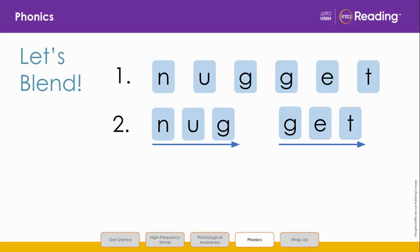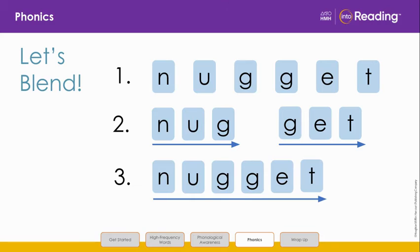Listen as I blend the sounds in the second syllable. Get, get, get. Now blend the whole word with me. Nugget, nugget.